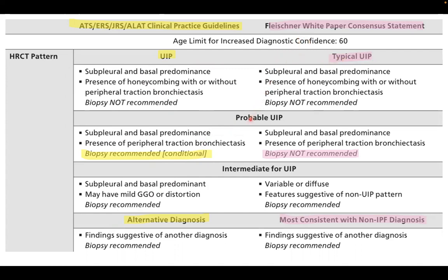Probable UIP is the same name in both systems. Indeterminate UIP is the same for both. However, instead of 'alternative diagnosis,' the Fleischner Society uses the name 'most consistent with non-IPF diagnosis.' The speaker prefers using 'typical UIP' for the definite picture to avoid confusion in reporting, uses 'probable UIP' and 'indeterminate UIP' as shared, and prefers the ATS term 'alternative diagnosis' over the longer Fleischner name.